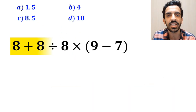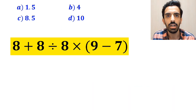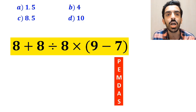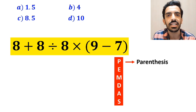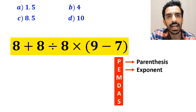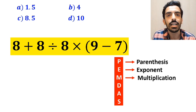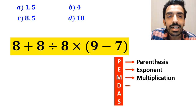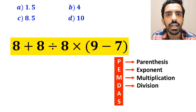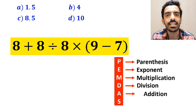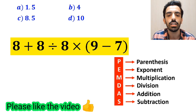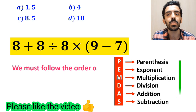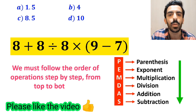Now let me show you how to solve this expression correctly. To solve this problem we must follow the PEMDAS rule: P stands for parenthesis, E stands for exponent, M stands for multiplication, D stands for division, A stands for addition, and S stands for subtraction. We must follow the order of operations step by step from top to bottom.